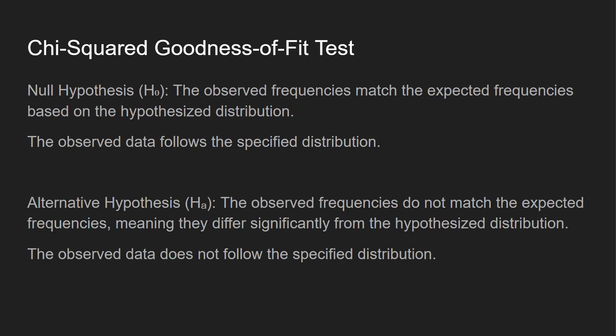The null hypothesis states that the observed frequencies match the expected frequencies based on the hypothesized distribution — the observed data follows the specified distribution. The alternative hypothesis states that the observed frequencies do not match the expected frequencies, meaning they differ significantly from the hypothesized distribution, and the observed data does not follow the specified distribution.